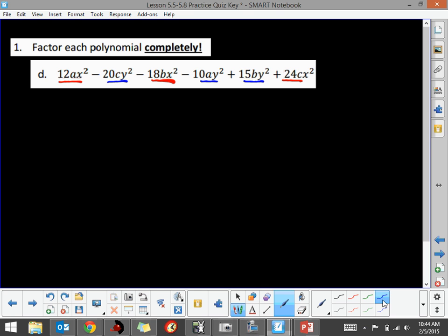So now that I have that kind of figured out, what I want to do is I want to write my 12AX squared. And I want to put all the X squares together, so minus 18BX squared. And then I want to put my plus 24CX squared. I want to put those three things in a group.